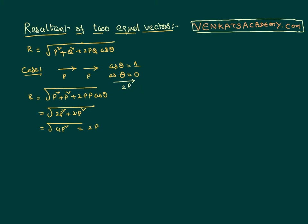This is one possibility. Let us take another possibility. Say I have one vector p in one direction and another vector p in the opposite direction — equal in magnitude but opposite in direction, like they are negative vectors to each other. I want to find the resultant. It is very clear that the angle between them is 180°.